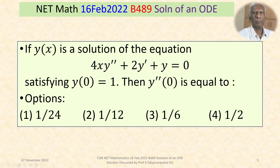We are given four options: Option 1 is 1/24, Option 2 is 1/12, Option 3 is 1/6, and Option 4 is 1/2. So we have the ODE 4x·y'' + 2y' + y = 0, and y(x) is a solution satisfying the initial condition y(0) = 1. We need to find y''(0) from these options.